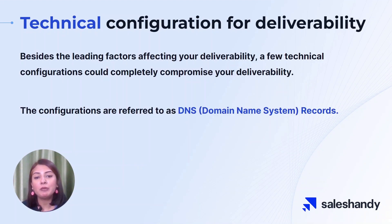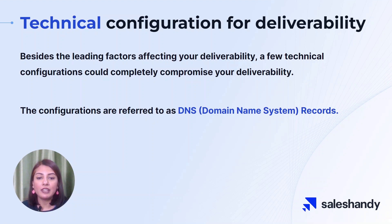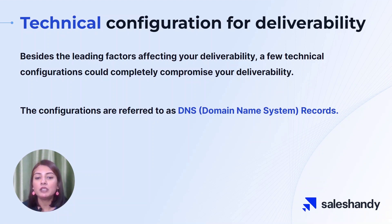Have you ever noticed that some of your emails don't make it to their intended recipients? This could be because of technical configurations known as DNS records. DNS stands for Domain Name System. These records play a big role in the deliverability of your emails, and if they're not set up correctly, it can really impact the chances of your emails being successful. Some common DNS records that can affect your deliverability include SPF, DKIM, and DMARC. These records help indicate the sender of the email and prevent spam and phishing attacks. By properly configuring these DNS records, you can improve your reputation with email providers and increase the likelihood of your emails being delivered as intended.